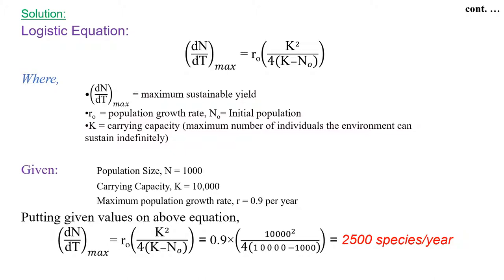It is dN/dt maximum equals r0 times K squared divided by 4 times (K minus N0).